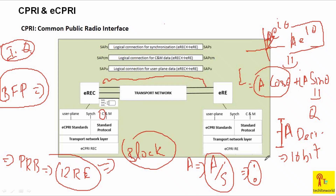The compression information is communicated to the receiver via the control plane. That is why, before sending any IQ user plane data, the DU always sends control plane data first. In that control plane message, it clearly tells the RH: 'This is the compression technique we are using, this is the number of bits used for mantissa, and this number of bits is used for the exponent.' At the receiver side, we scale back up.